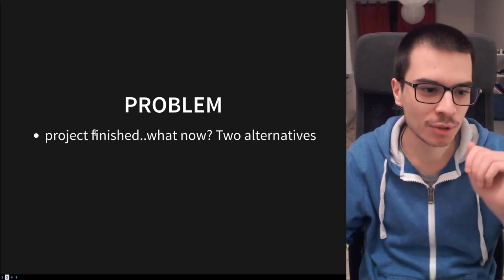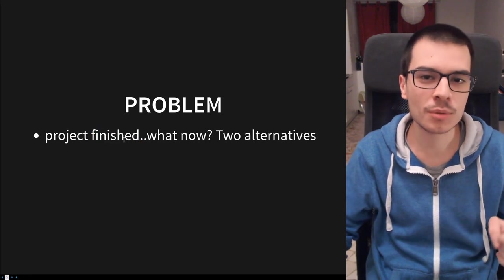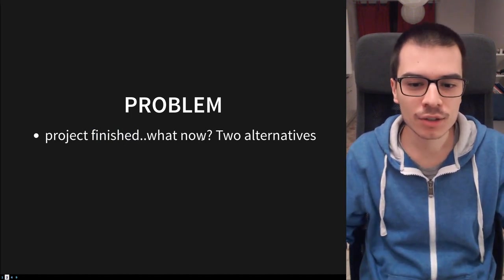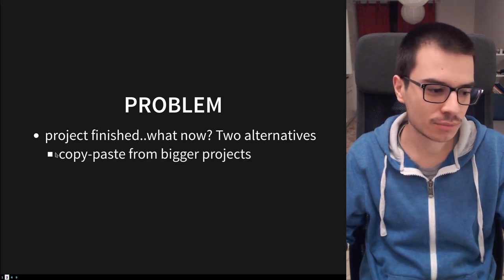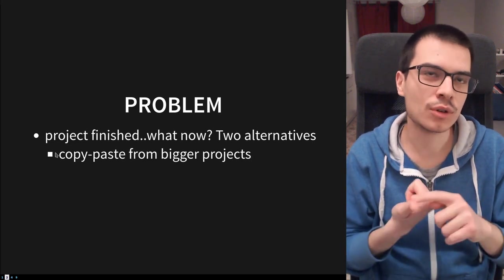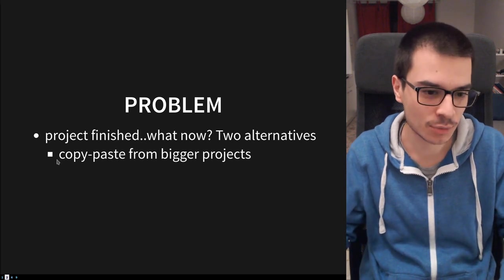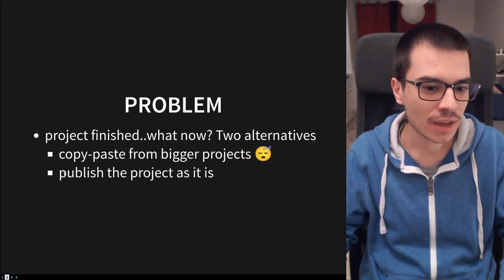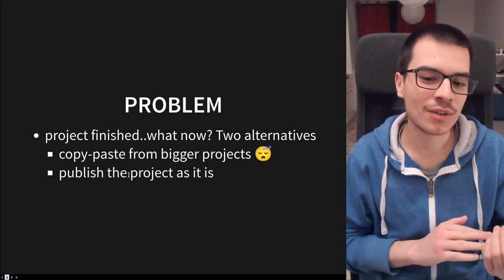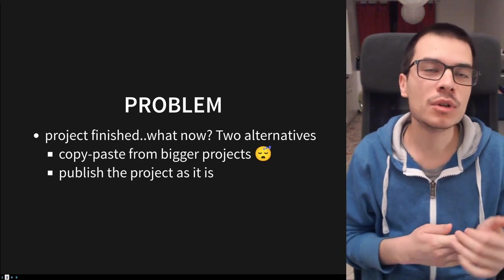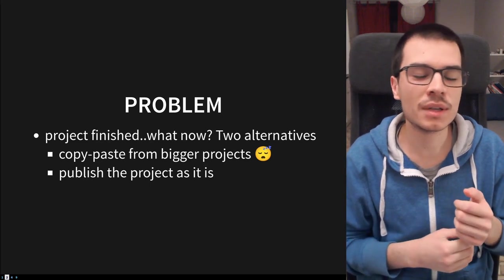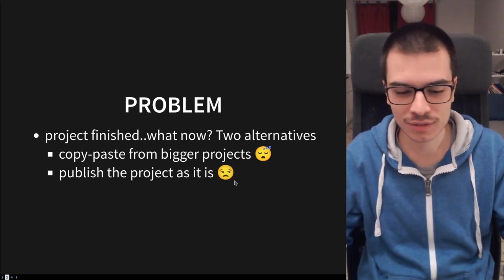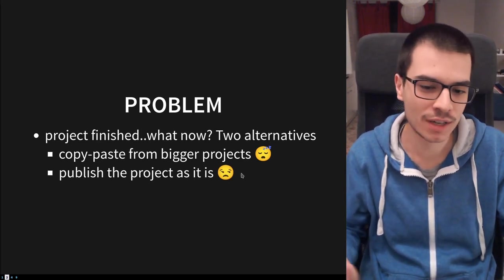So we have a problem: we've sort of finished the project, or maybe we have a prototype, and we want to upload our project on GitHub. We have two alternatives: we can copy-paste this stuff from bigger projects, but this is really boring. Or we publish the project as it is, without providing the README, which basically means that a visitor doesn't know what the project does — and this is not really professional or acceptable for a nice project.